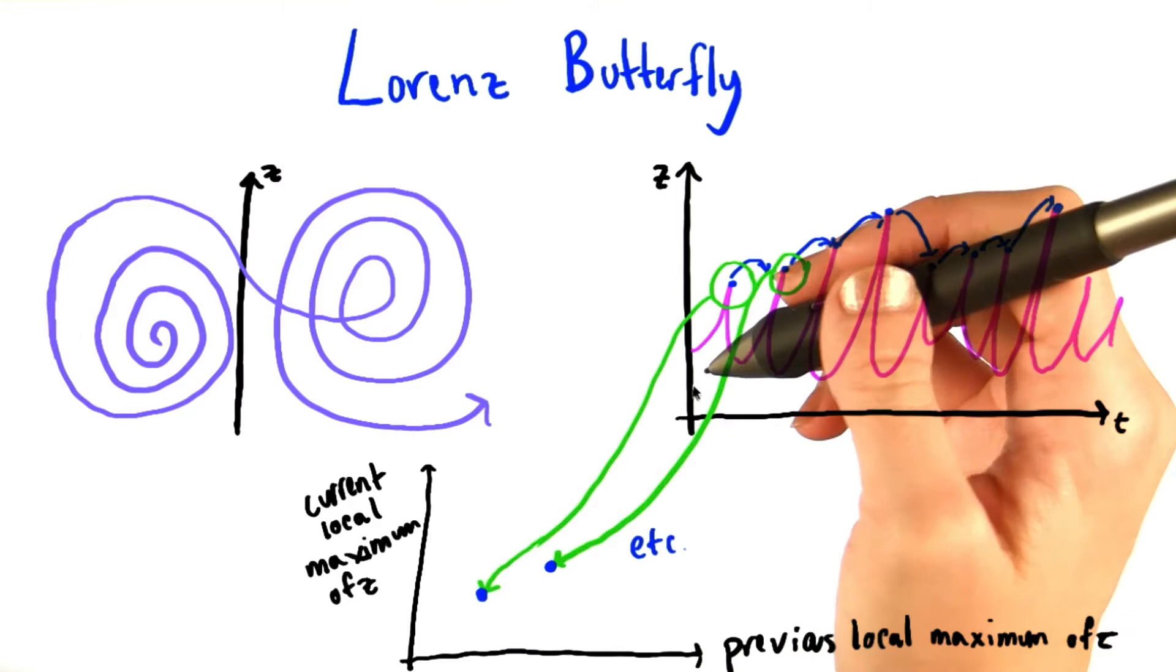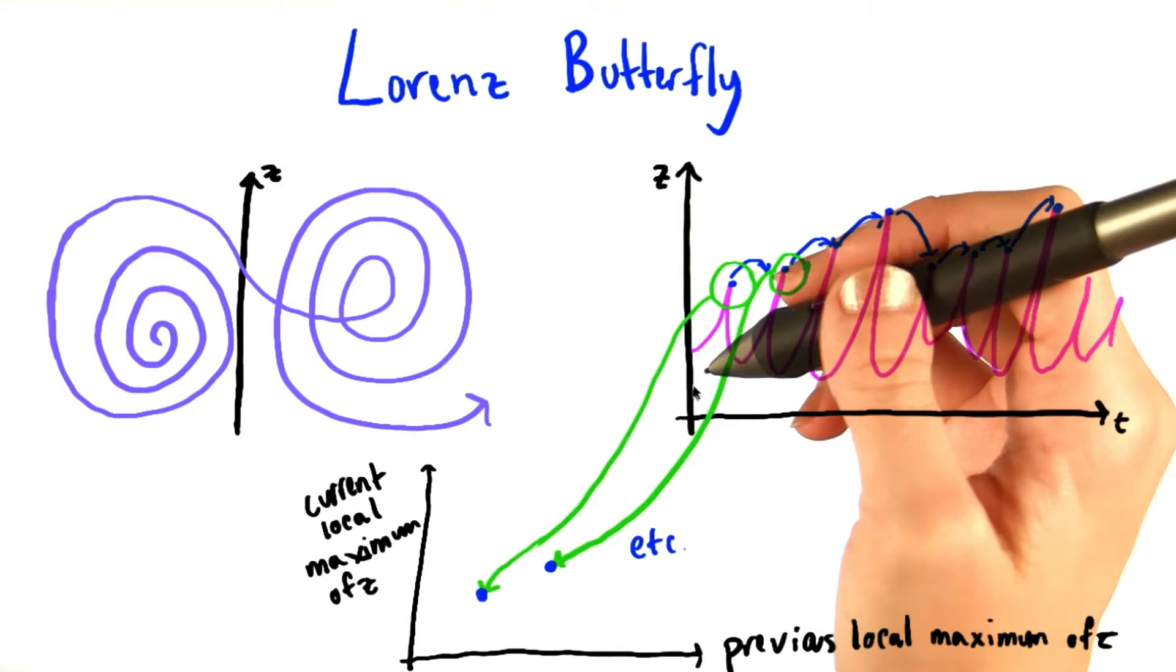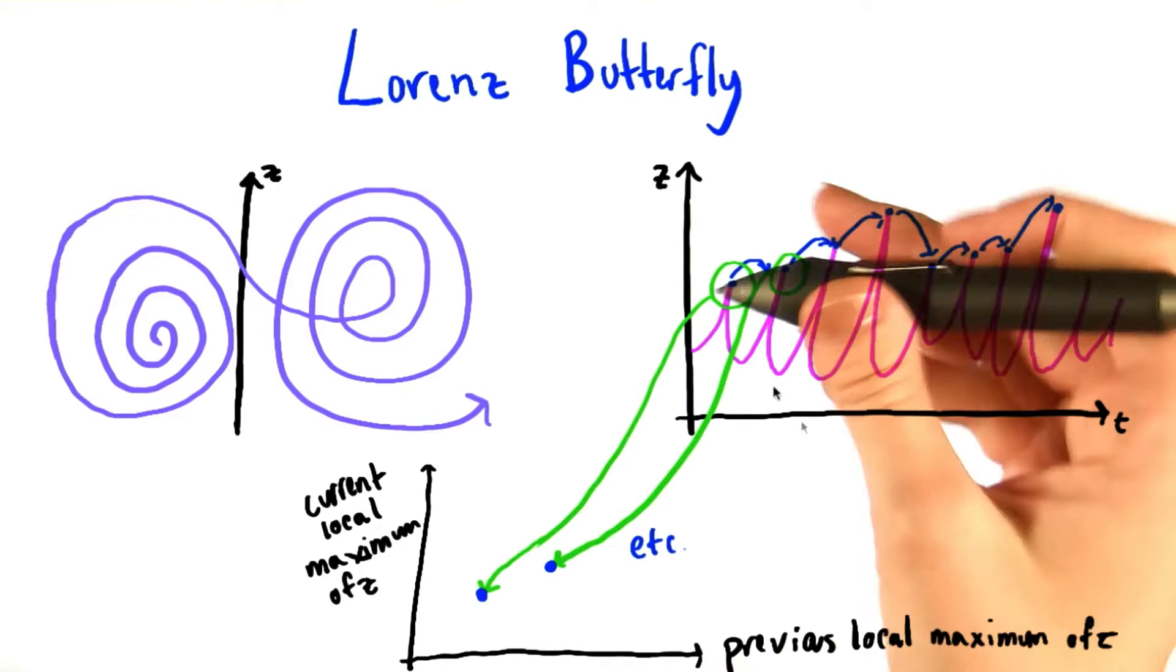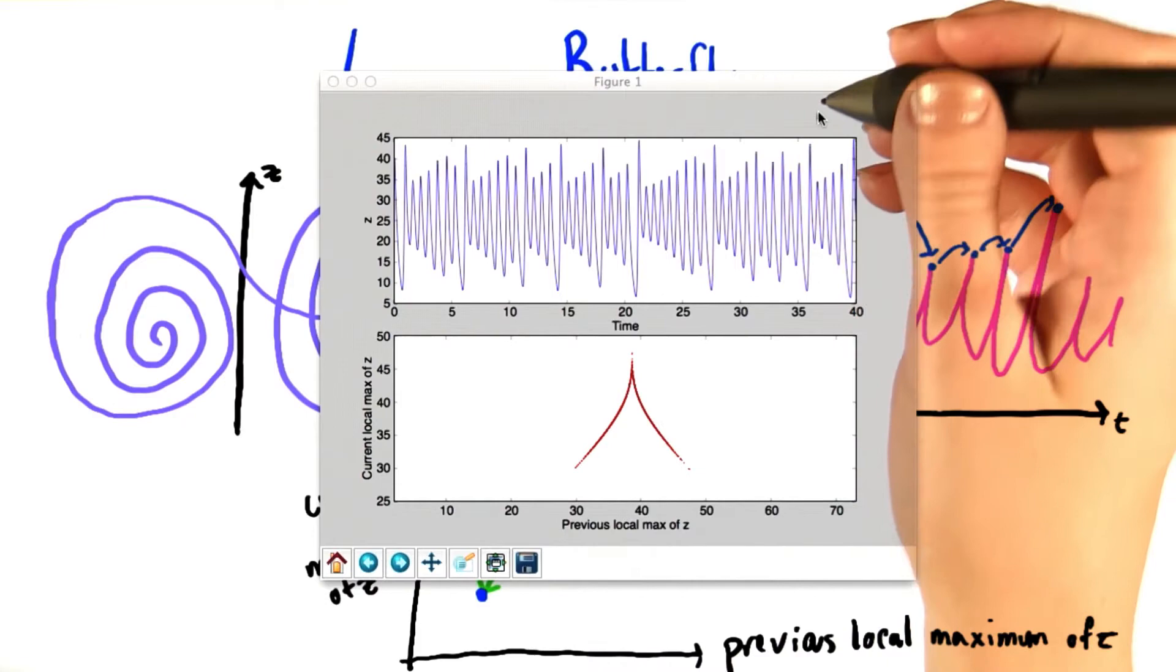What we want to know is if we can predict the progression of these local maxima along the z-axis. We can make a plot of the current local maximum of z versus the previous local maximum, and then take each of these maxima and plot them down here. So here's a preview of what you should get as your solution to this problem.